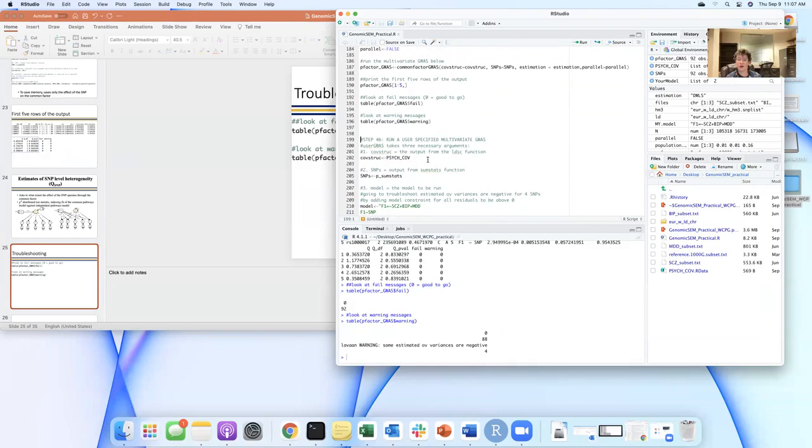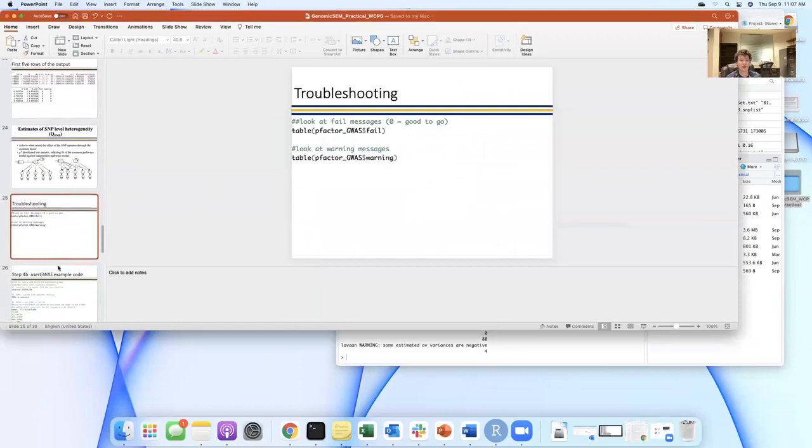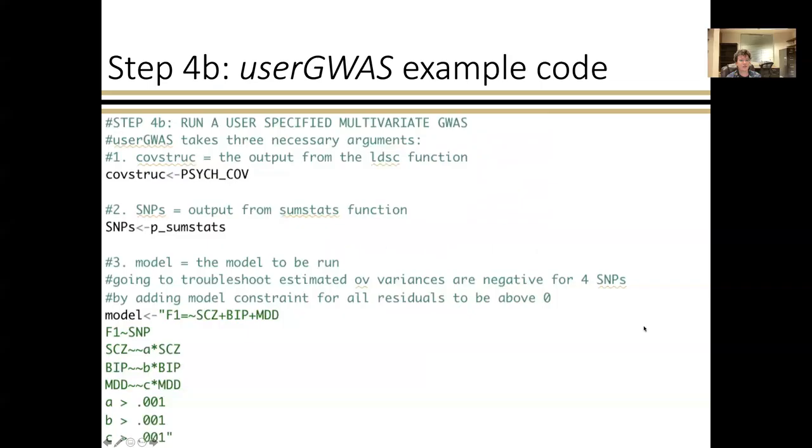For user GWAS, it takes those same first two arguments of the output from LD score regression and the sum stats output, but then you're also going to specify the actual model that you want to run that's now going to include the effect of this individual SNP. So we're running that same model, the common factor model, the common factor GWAS is automatically specifying behind the scenes where the SNP predicts that common factor, but then we're additionally adding in these model constraints. We're renaming these parameter labels of the residual variances for schizophrenia, bipolar, and MDD, and we're constraining them to be above zero because of that warning that we got when running common factor GWAS.